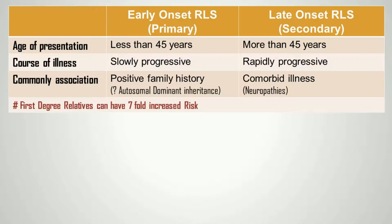The two common types of RLS described are: 1. Primary RLS. 2. Secondary RLS. There are important differences between the two varieties. Primary RLS is known to occur in younger individuals, less than 45 years of age. It is most often slowly progressive and commonly associated with a positive family history, which follows an autosomal dominant pattern of inheritance.